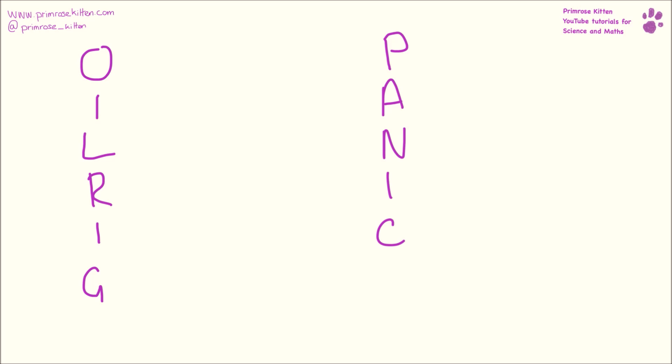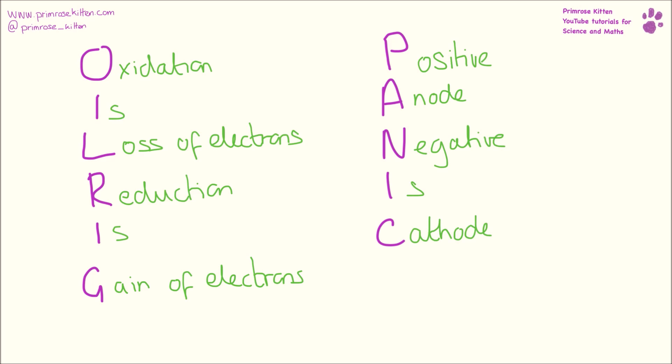When we are doing electrolysis half equations, there are two things we need to remember: OIL RIG and PANIC. OIL RIG: oxidation is loss of electrons, reduction is gain of electrons. PANIC: positive anode, negative is cathode. We are going to use these to decide whether the equations are oxidation or reduction and whether they take place at the anode or the cathode.